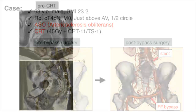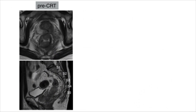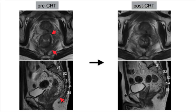The tumor directly invaded the levator ani muscle, left side neurovascular bundle, and periosteum of the S5 sacrum. Although preoperative chemoradiotherapy reduced the size of the tumor, the tumor still remained to invade the levator ani muscle and periosteum of the S5 sacrum.